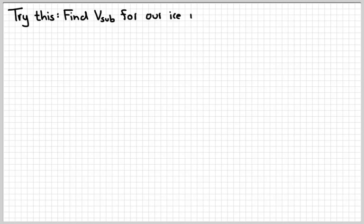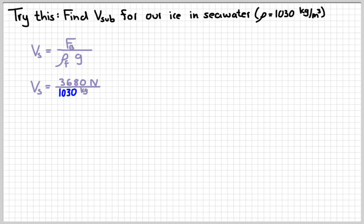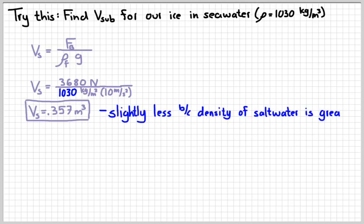So try this on your own. See if you can find the submerged volume for the ice if we put it in seawater, which has a slightly higher density of 1030 kilogram per cubic meters. Press pause real quick and just see if you can figure out what the submerged volume would be in that case. You do the same thing. Still equal to the buoyant force over ρg. The force buoyancy would still be equal to the weight because it's still at rest. Just use a different density this time. You get something like 0.357 cubic meters. So just slightly less than when we assumed the water was fresh water. However, density of salt water being greater means it can exert more pressure with less depth. So you don't need as much of the ice submerged to make it float.